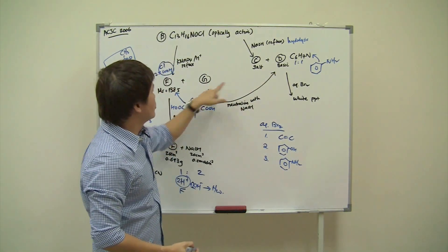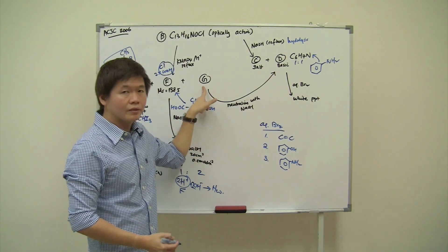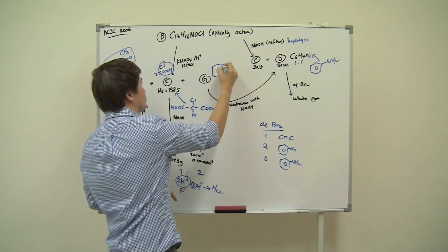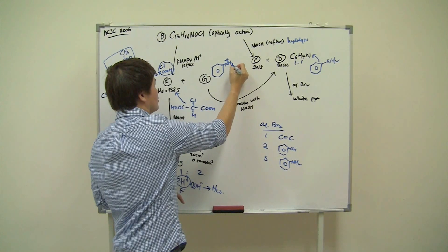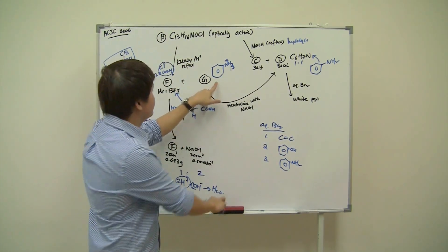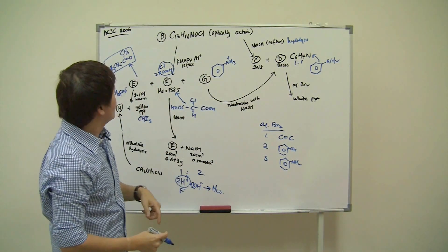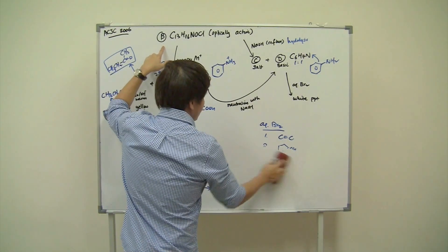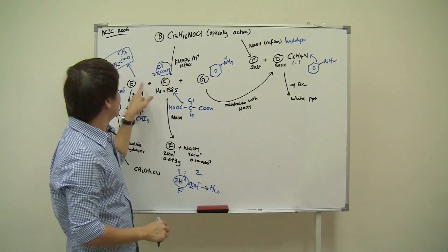Now we've solved H, E, F, G, and D. We're left with C and B. We can't easily solve C without knowing B first, so we'll piece together E, F, and G to construct B, then solve C last. Looking at E (a ketone), F (a dicarboxylic acid with Cl), and G (a protonated amine): permanganate under acidic heat conditions is what converts B into these three compounds.